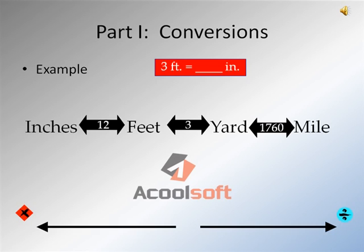What all students have been provided with is this arrow chart. If you'll notice at the bottom, there are two arrows — one to the left pointing to multiplication, one to the right pointing to division. The first thing we want to do is find the measurement that we do have; in this case, feet.